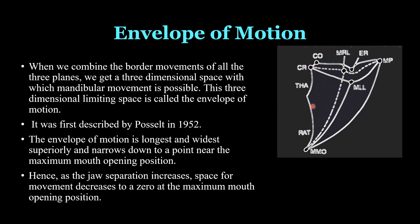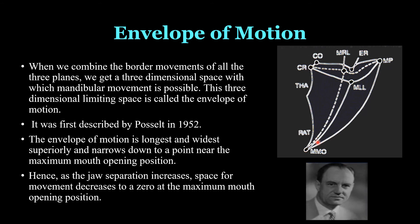The envelope of motion is formed when all border movements of the three planes are combined, creating a three-dimensional space within which mandibular movement is possible. This three-dimensional limiting space is called the envelope of motion. It was first described by Posselt in 1952. The envelope of motion is longest and widest superiorly and narrows down near maximal mouth opening; as jaw separation increases, the space for movement decreases to zero at maximum mouth opening.